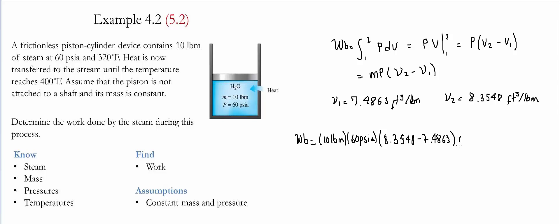Both of them are in feet cubed per pound mass and the conversion that we're going to use is for one BTU. We have 5.404 psi times feet cubed.